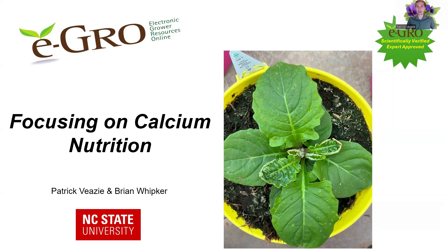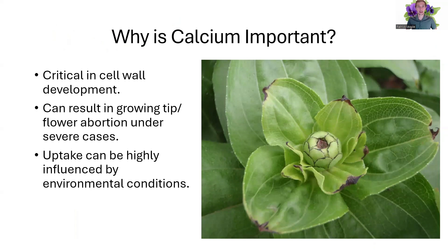Greetings, everyone. I'm Patrick Vizu with NC State University, and today we're going to be focusing in on calcium plant nutrition and diagnostics. There are a lot of reasons why calcium is important. It's critical in cell wall development and can result in growing tip or flower abortion under severe cases. Uptake is highly influenced by your environmental conditions, meaning that even if you're supplying it, your environmental conditions can lower that transpiration rate and result in a calcium deficiency.